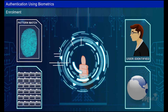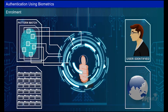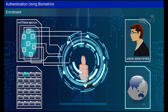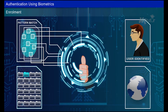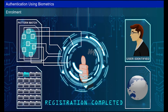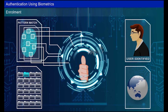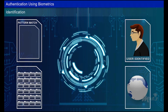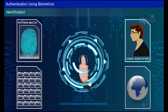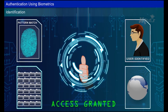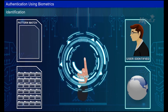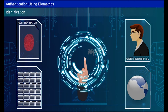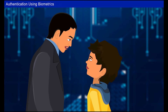During enrollment, the user's characteristics are measured and the results digitized. The significant features are extracted and stored in a record associated with the user. The record can be kept in a central database for logging into a remote computer, or stored on a smart card the user carries and inserts into a reader. During identification, the user provides a login name, the system makes the measurement again, and if the new values match those sampled at enrollment, the login is accepted; otherwise it is rejected.